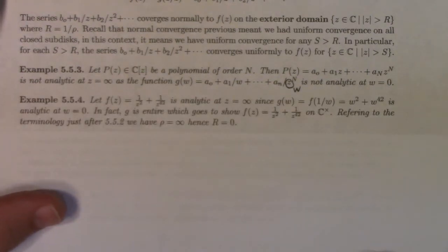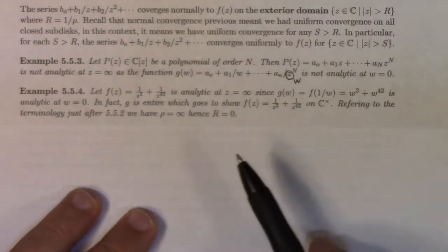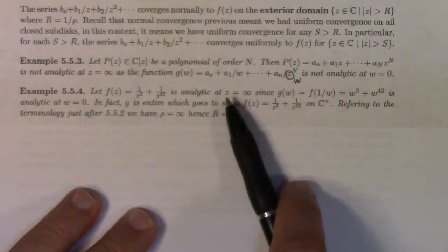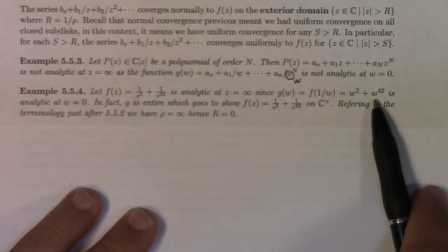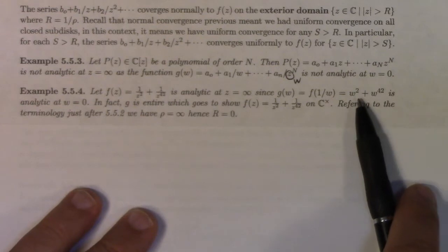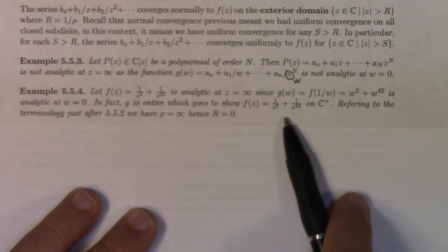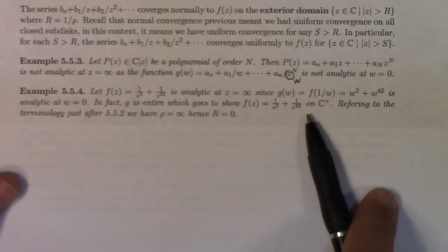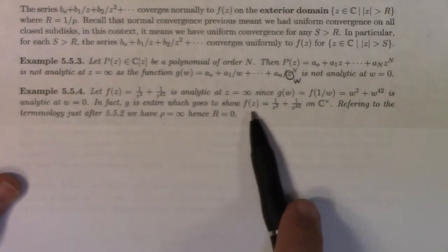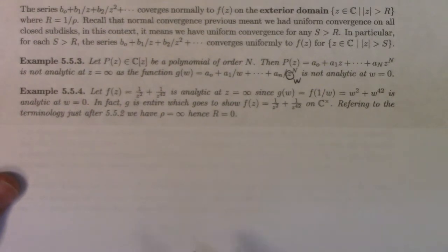How about f of z equals 1 over z squared plus 1 over z to the 42nd power? That one is analytic at z equals infinity, because the corresponding function g of W is f of 1 over W — you get W squared plus W to the 42. And that is analytic. Every polynomial is analytic around zero. So f of z is analytic at infinity. In fact, this function is analytic on the punctured complex plane — not analytic at zero, but analytic away from zero and also at infinity.